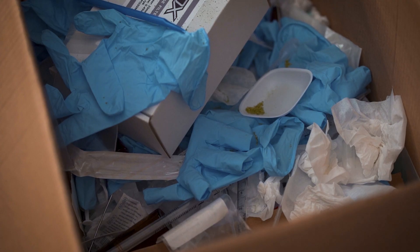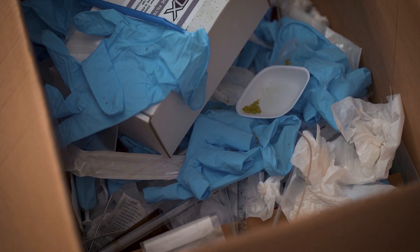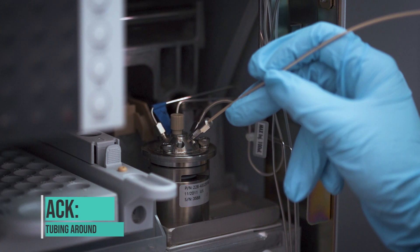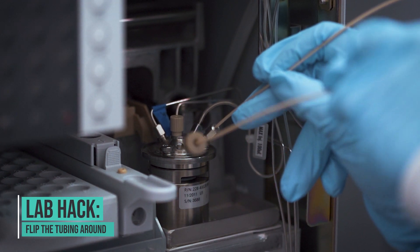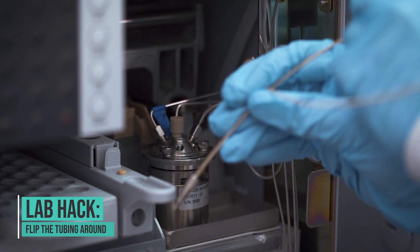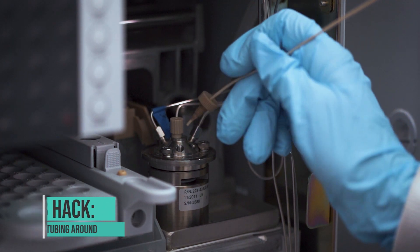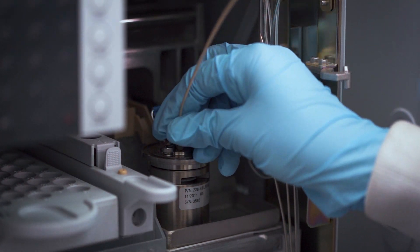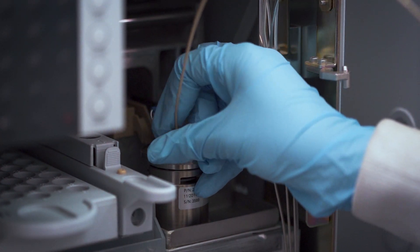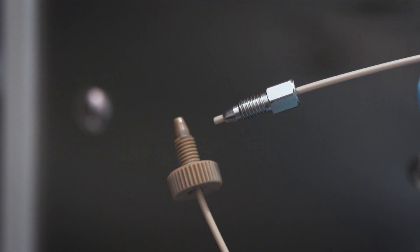If the pressure goes down, it's that line. Instead of getting a new line, a lab hack is you could simply turn around that line and plug the other end into the six port valve and blow the clog out the front.